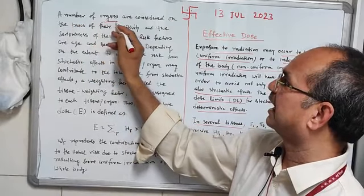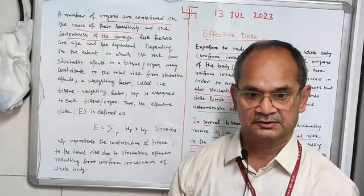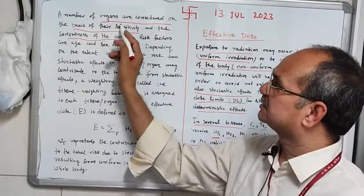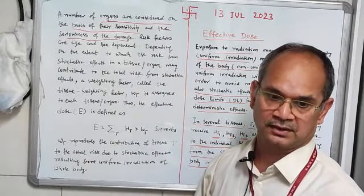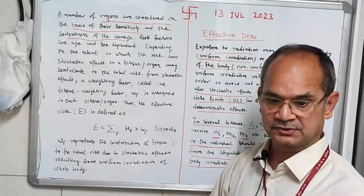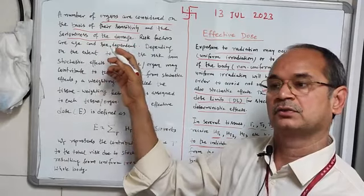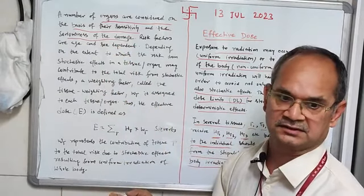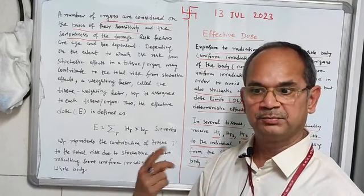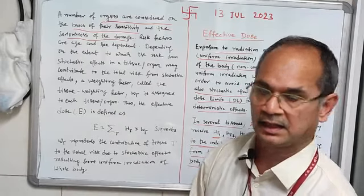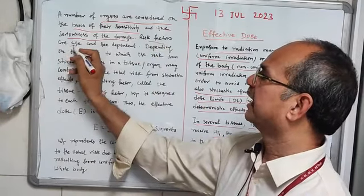A number of organs are considered on the basis of their sensitivity and the seriousness of the damage. Every organ is different — not only in sensitivity to radiation, but also in how seriously it can be damaged. Both factors are considered when calculating risk factors, and risk factors have been found to be age and sex dependent.